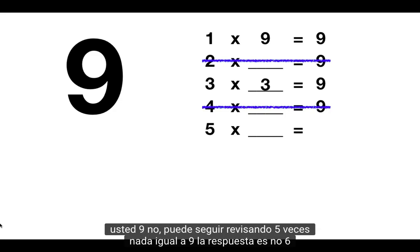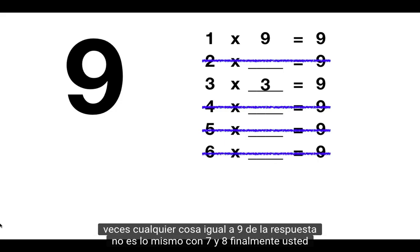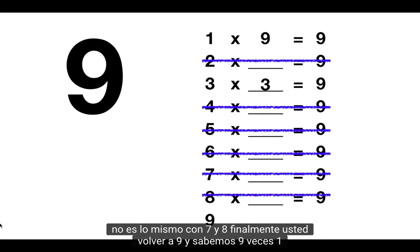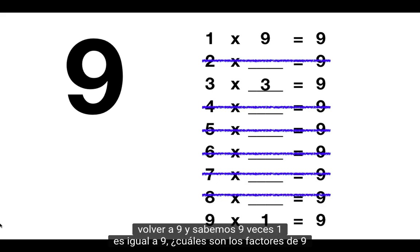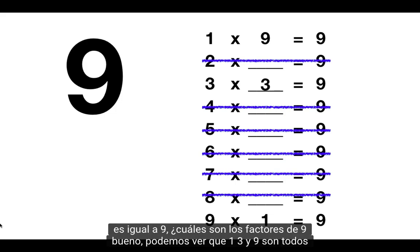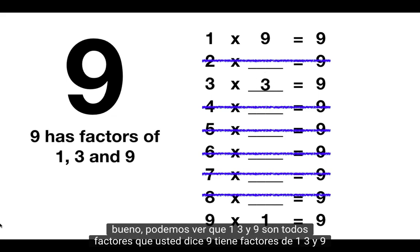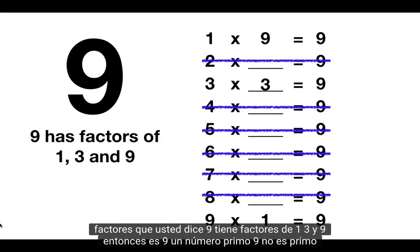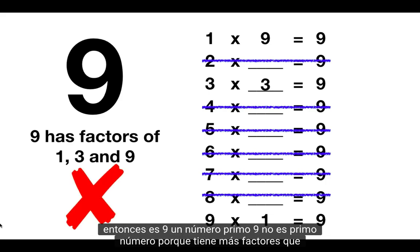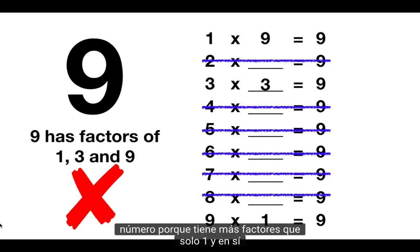You can keep checking: 5 times anything equaling 9 — the answer is no. 6 times anything equaling 9 — the answer is no. Same with 7 as well as 8. Finally you get back to 9, and we know 9 times 1 equals 9. So the factors of 9 are 1, 3, and 9. So is 9 a prime number? 9 is not a prime number, because it has more factors than just 1 and itself.